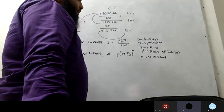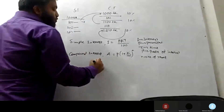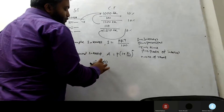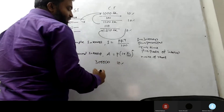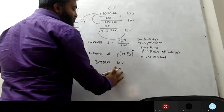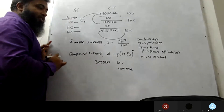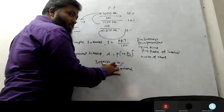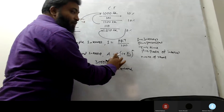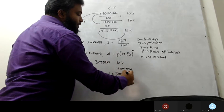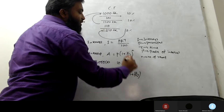A student asks: is N the power? Yes, N is the number of years. For example, if you have 3 lakhs in the bank at 10% interest, after 3 years the amount equals 3 lakhs times 1 plus 10 divided by 100, raised to the power 3.